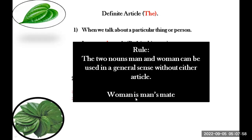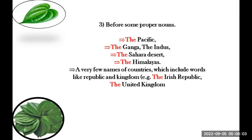The second use is with proper nouns. For example, 'The Pacific' — which is the world's biggest ocean. The rivers Ganga and Sindus — Pakistan's biggest river. 'The Sahara Desert', which is Africa's biggest desert. 'The Himalayas.' And some republics or kingdoms: 'The Kingdom of Saudi Arabia', 'The Irish Republic', 'The United Kingdom of Great Britain and Northern Ireland.'